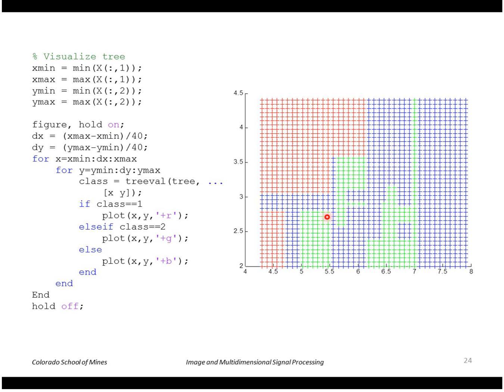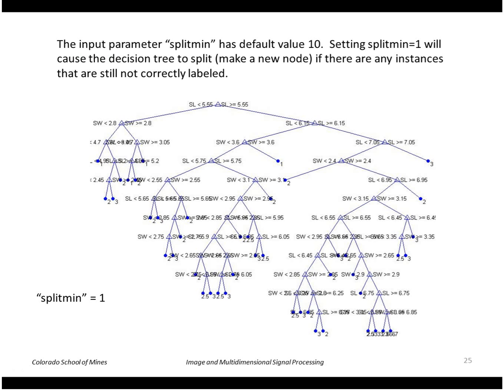One thing about the decision tree is that it does tend to generalize, although if there is any point at all it will try to capture that value. You can control the degree of generalization using this parameter split_min to the tree fit function. Split_min has a default value of 10 and indicates the number of incorrect samples that the tree will tolerate before it splits a node.